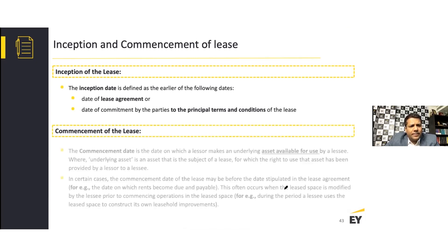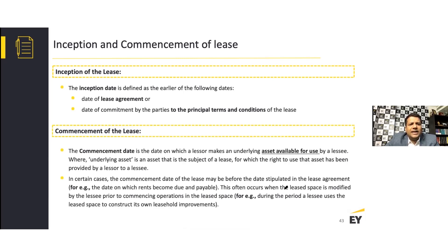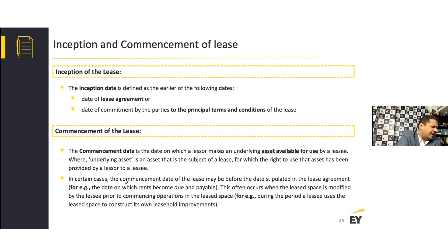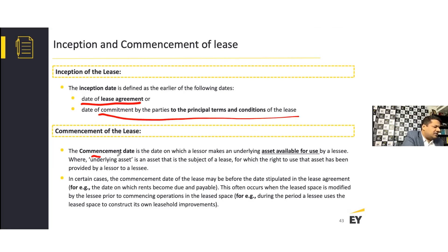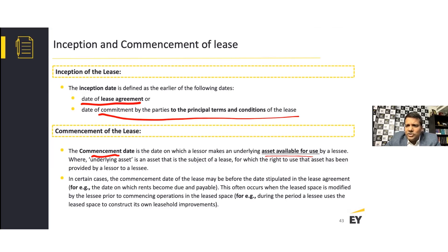In certain cases, the commencement date may be before the date stipulated in the lease agreement. This often occurs when the lease space is modified by the lessee prior to commencing operations — for example, using the lease space to construct leasehold improvements. You may get possession of a bare shell and need to do fit-outs: get furniture, install equipment, and so on. That fit-out or leasehold improvement period is often called the rent holiday period.